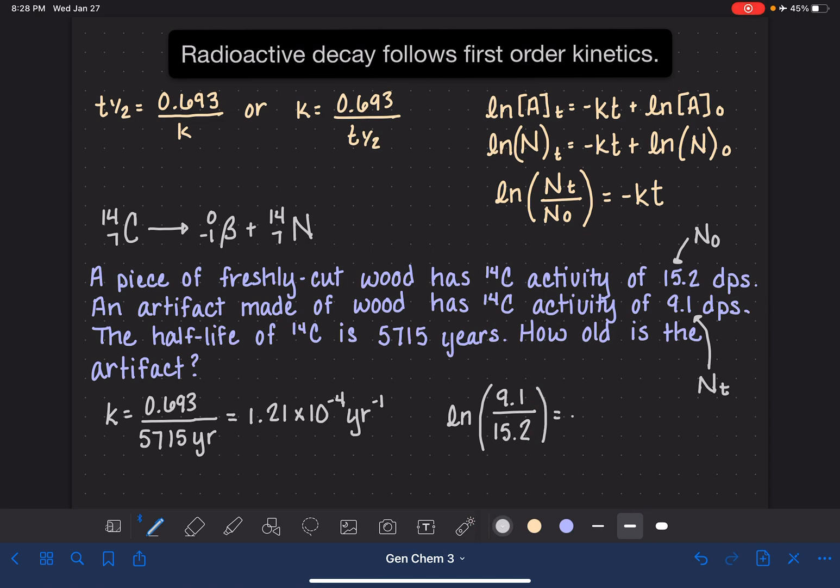And that is equal to negative k, our rate constant, 1.21 times 10 to the minus 4 years to the minus 1. I'm going to move this out of the way.